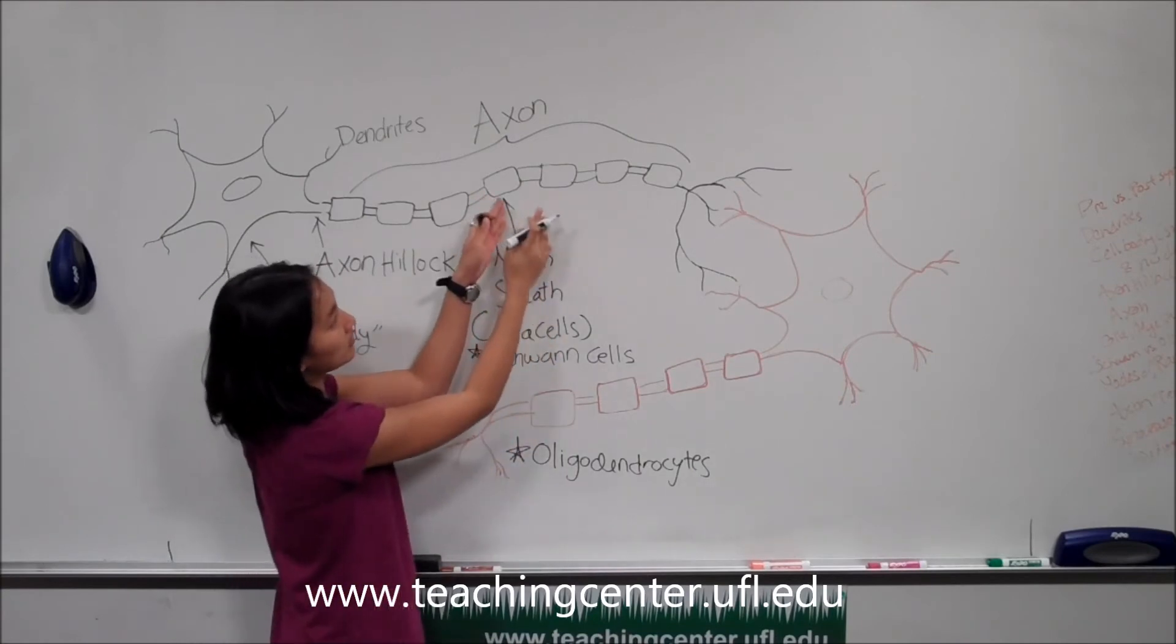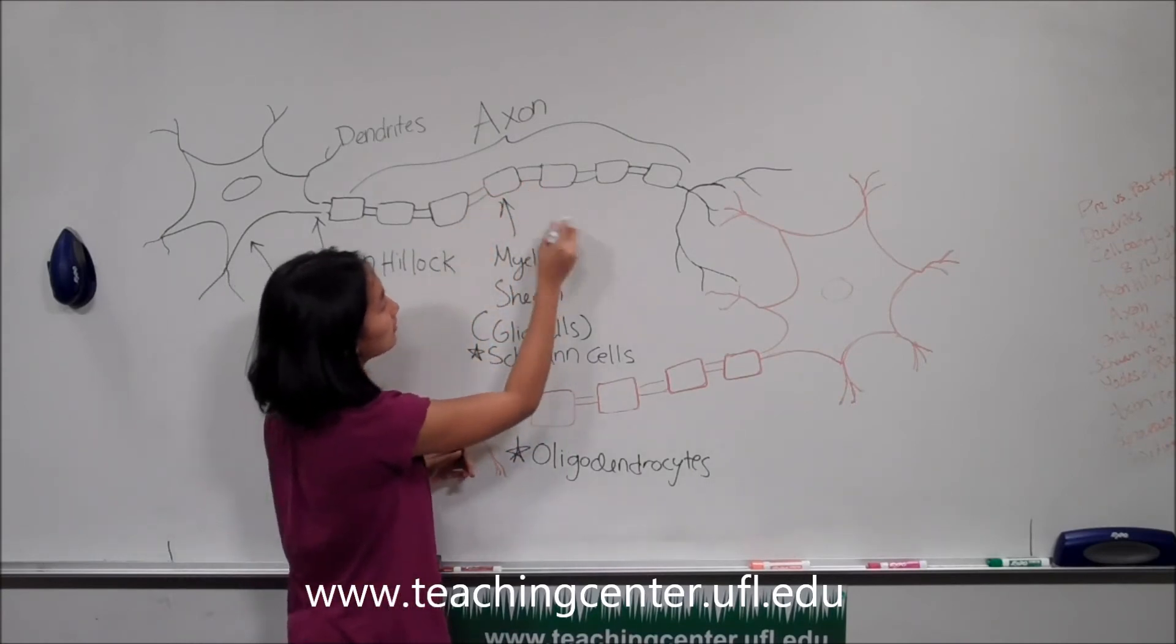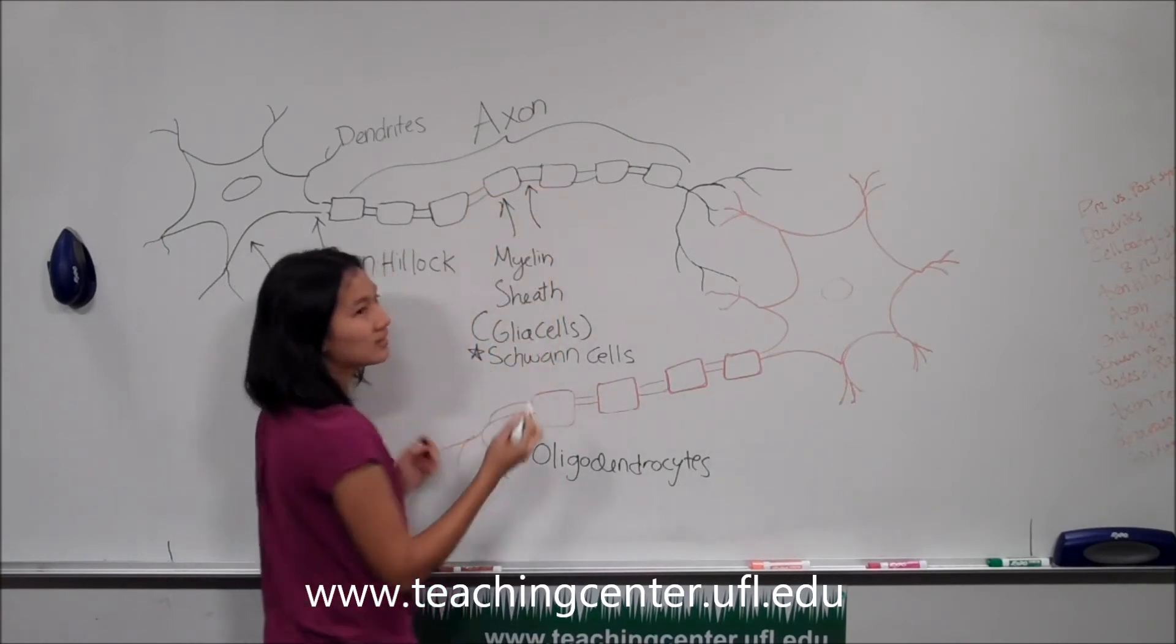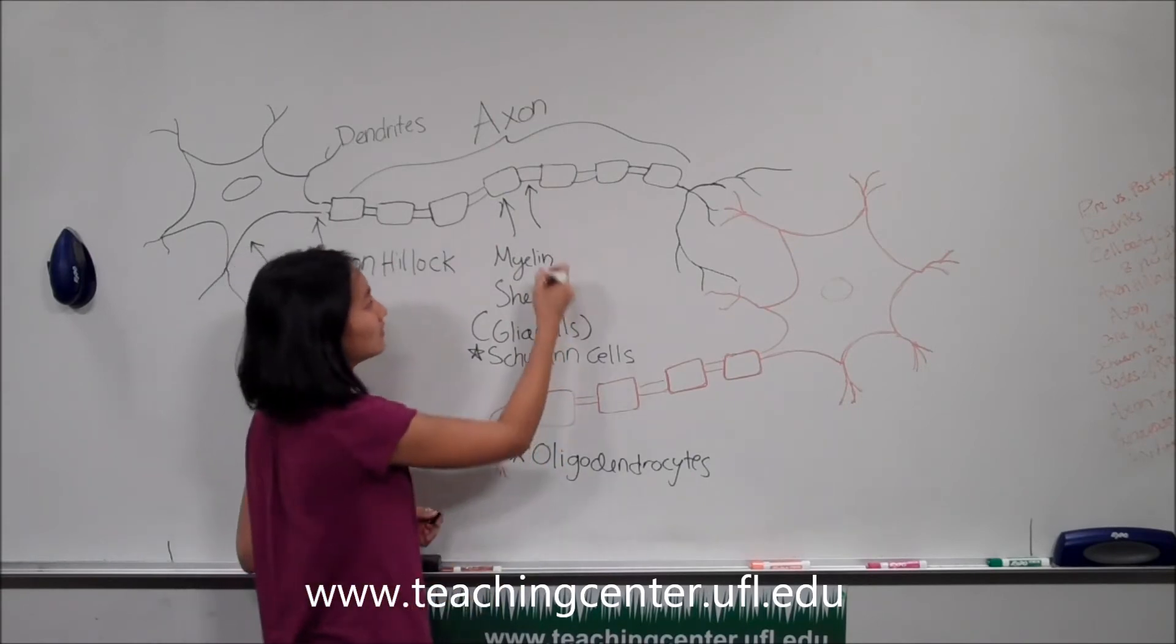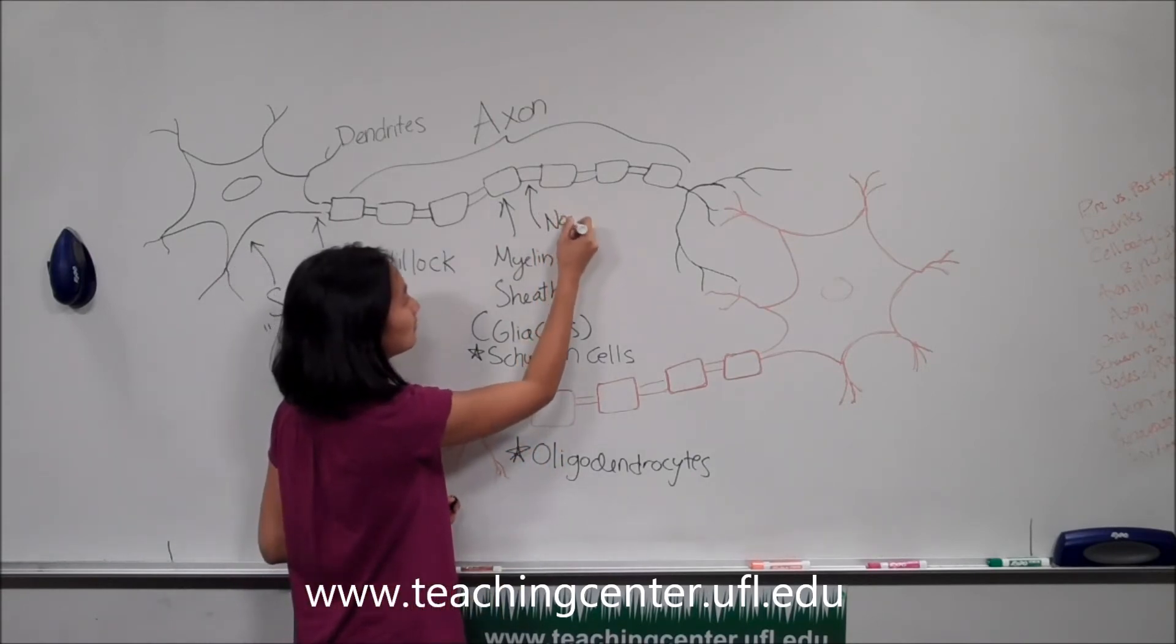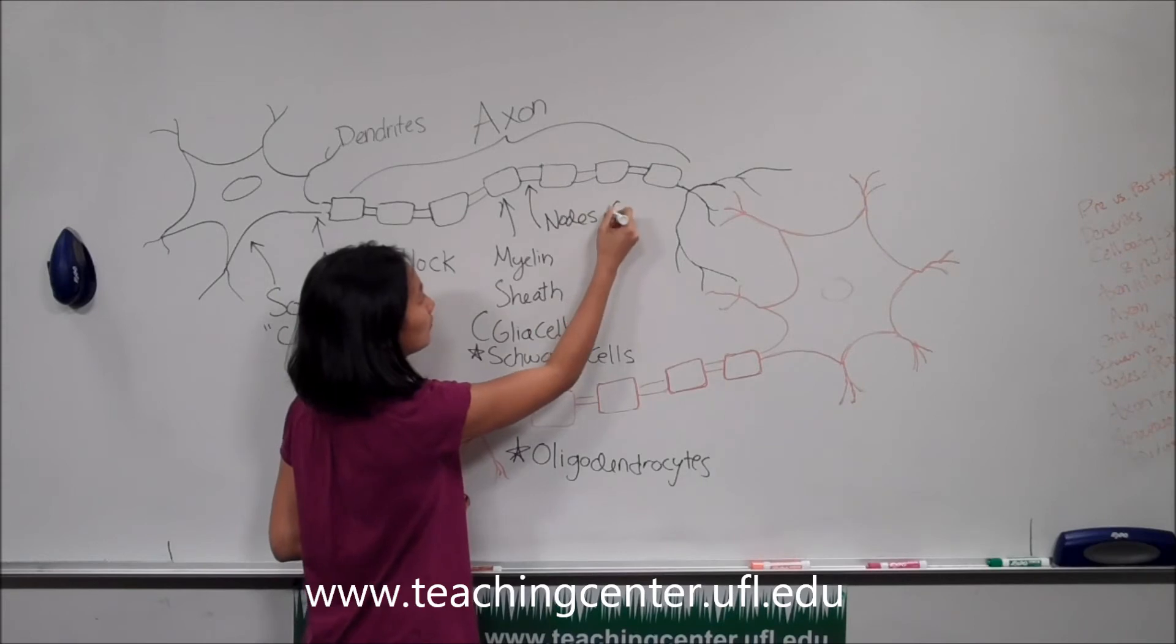Now the spaces in between the myelin sheath, in a sense the naked axon, is known as the nodes of Ranvier.